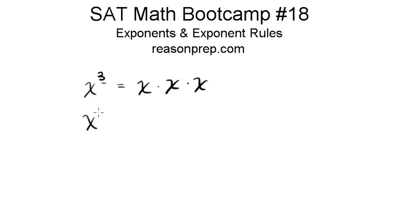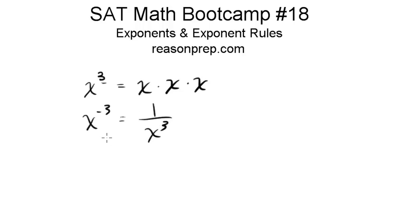If we have something like x to the minus 3 — this doesn't come up too much, but it's something you should know for the SAT — when you have a negative exponent, it's the same thing as taking the reciprocal and making the exponent positive. So this is just 1 over x to the 3. You can generalize this: x to the minus a is just 1 over x to the a, where a is any number.